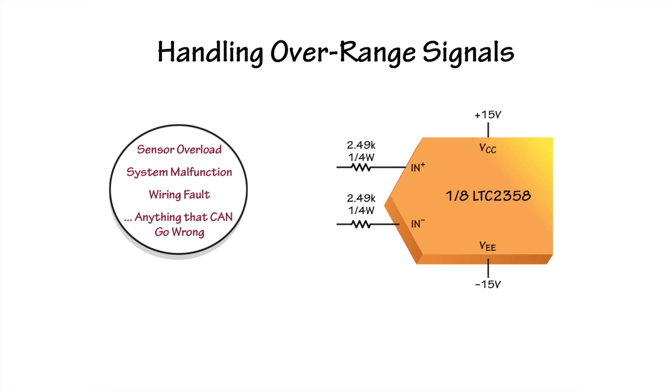Overrange ADC input signals can occur for a number of reasons. Sometimes they're as obvious as putting a 2 kilogram object on a 1 kilogram scale, or they can result from malfunctioning sensors, power supplies, and wiring. Accounting for these conditions is at best a distraction, and at worst compromises performance. The LTC-2358 helps make it easier to build high-performance systems that are robust to overrange signals.